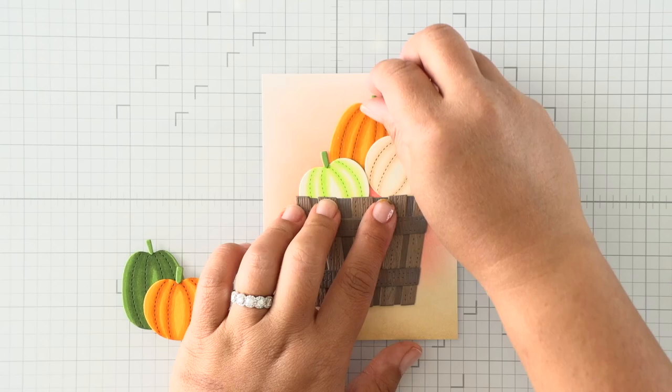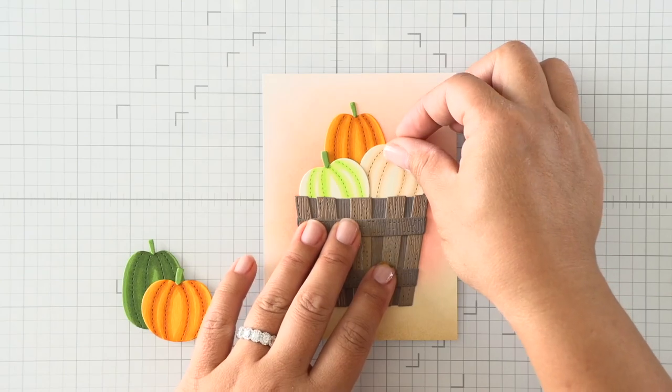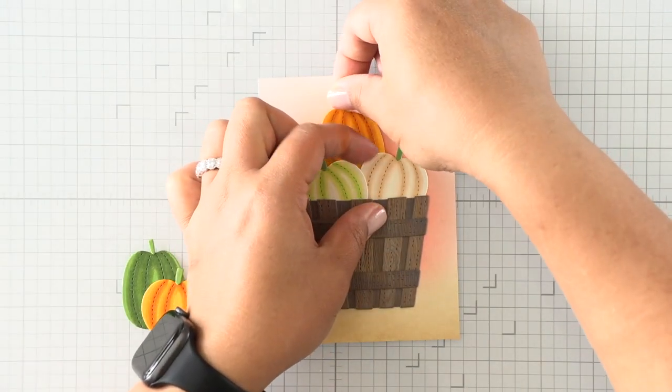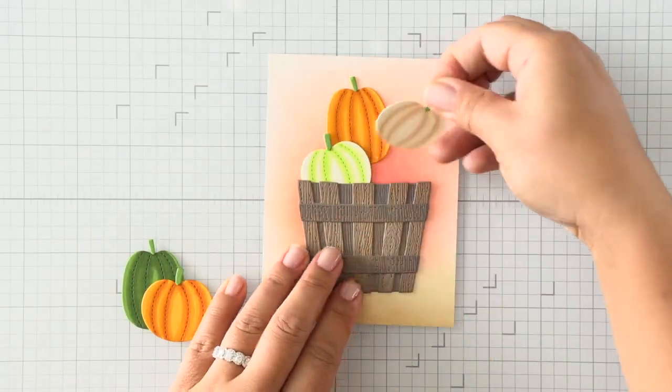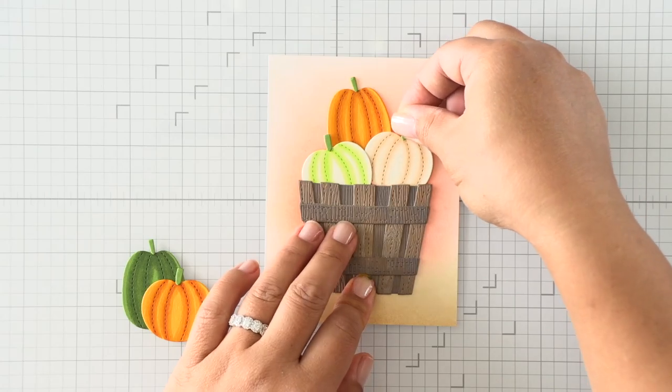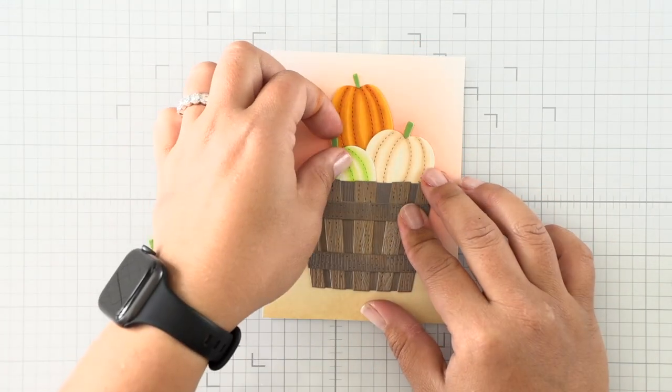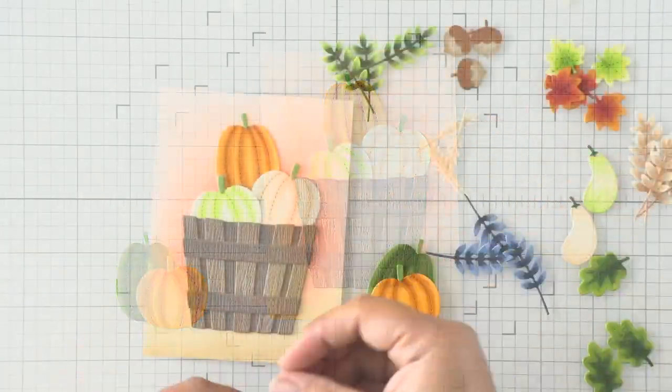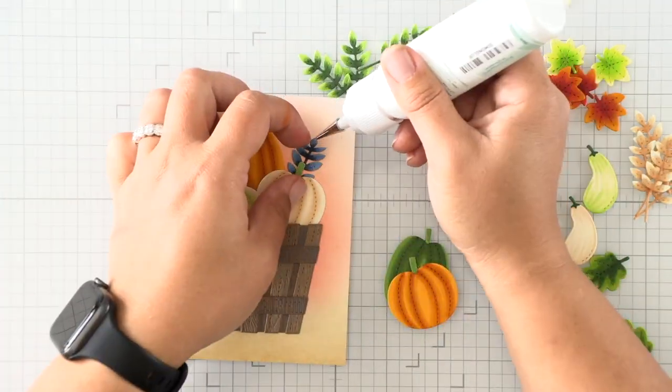Now we can move on to the fun part, which is assembling our card and playing with the layout. What I'm doing here is adding the basket with the pumpkins first so that I can know where to adhere the larger pieces, and that way I can work my foliage around all of these pieces. I'm adhering the pumpkins down first with some liquid adhesive. This will give me a visual of where my fall basket will be at its highest and lowest, and then we can build our foliage from there.